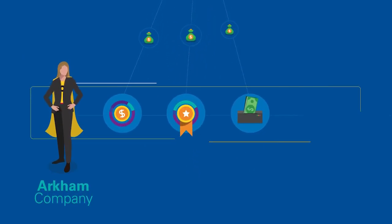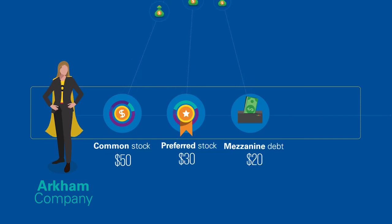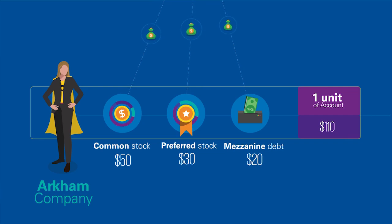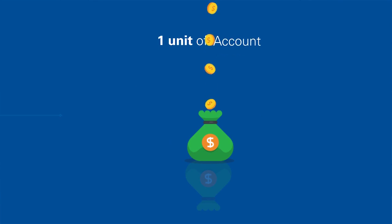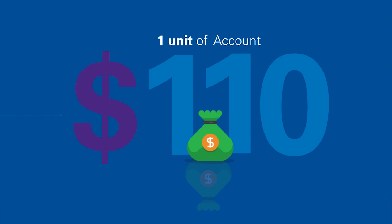If the securities could be sold individually for $50, $30, and $20 respectively, but could be sold together for $110, the FASB guidance would tell us that the unit of account is the bundle of all three securities, as opposed to the securities individually, and that our fair value measurement would be based on one unit of account and would result in a fair value measurement of $110. This is because selling the bundle of securities would yield the result that is in the economic best interest of the seller.